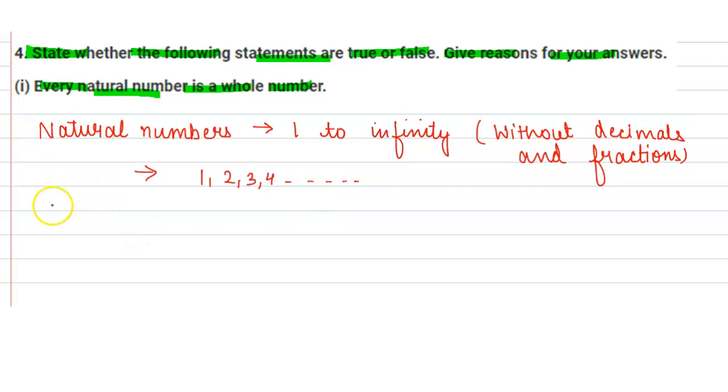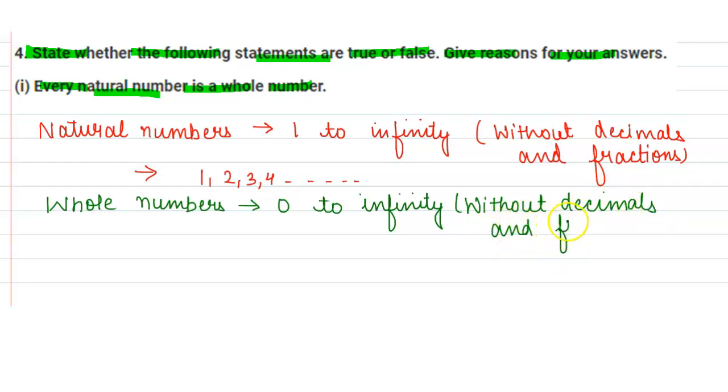Next we have whole numbers. Whole numbers are those numbers which start from zero and go to infinity. Also, whole numbers do not contain fractions and decimals. So all the counting numbers that start from zero are whole numbers. For example: zero, one, two, three, four, and so on.